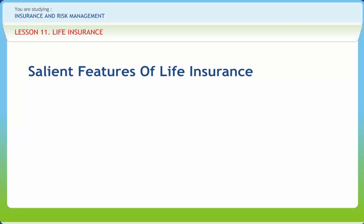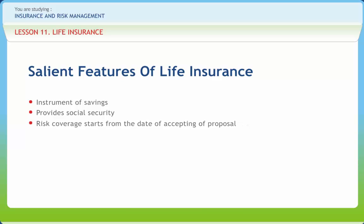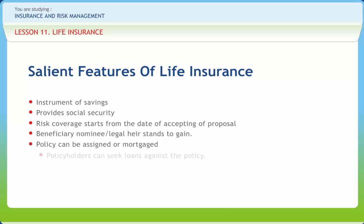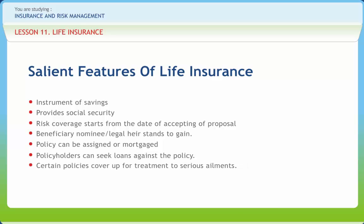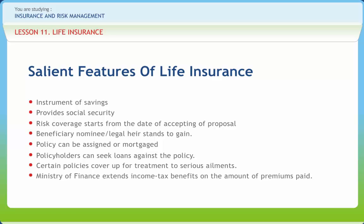Salient features of life insurance are: instrument of savings; provides social security; risk coverage starts from the date of accepting of proposal; beneficiary, nominee or legal heir stands to gain; policy can be assigned or mortgaged; policyholders can seek loans against policy; certain policies cover treatment for serious ailments; Ministry of Finance extends income tax benefits on the amount of premiums paid; money can be set aside for children's marriage and education and provision for old age.